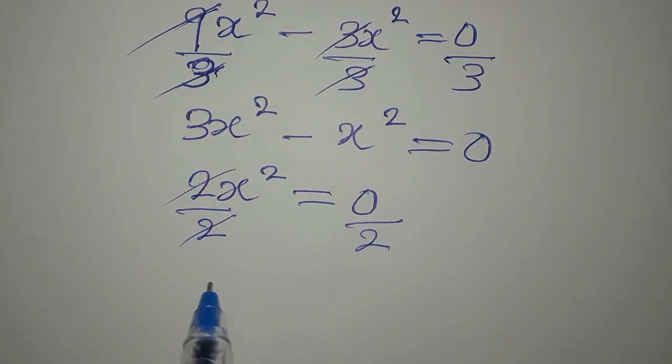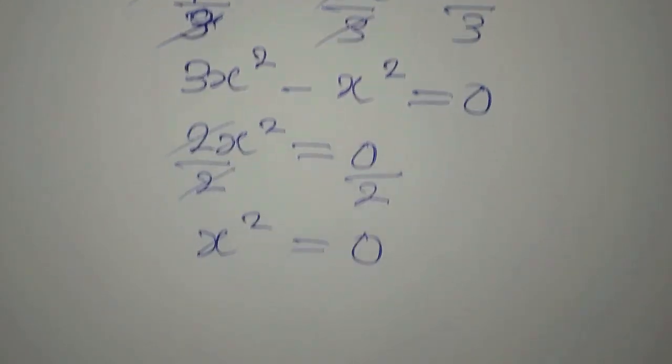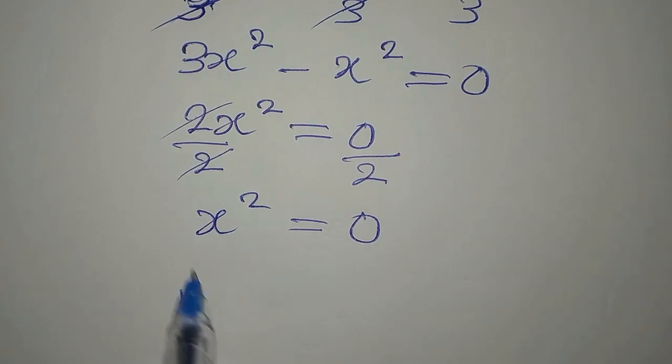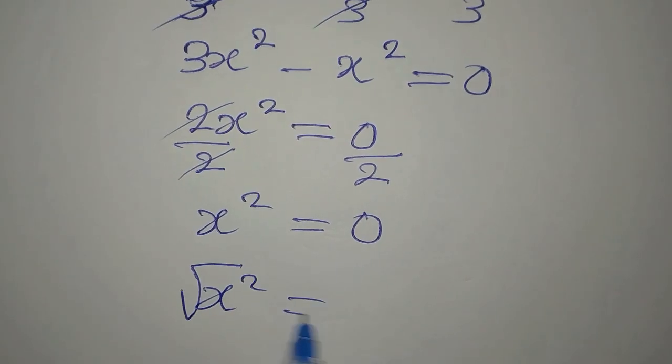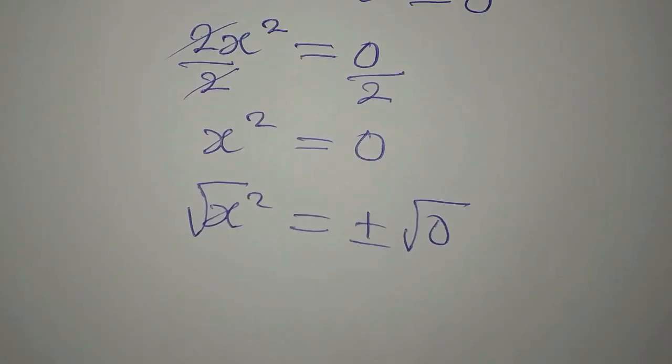And then x² will be equal to zero. Ordinarily we are supposed to say that square root of x² is equal to plus or minus square root of zero. Square root of zero is going to give you zero.